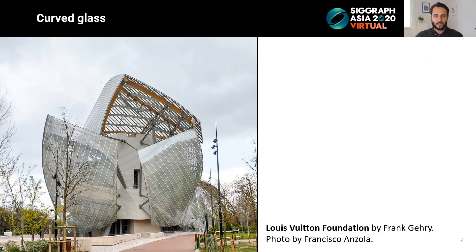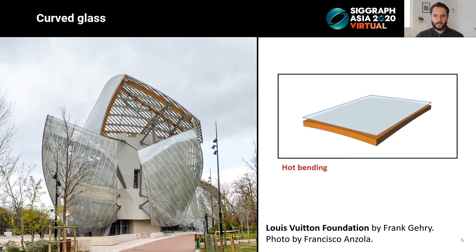Traditionally, free-form glass facades, such as this example, are fabricated using hot bending. This process is costly and labor intensive. Fabrication of each panel requires heating glass in a special oven to make it moldable. Then the panel is bent into shape and retains its curved state after cooling. Some of the disadvantages of the method are the high cost and energy requirements, along with the material waste due to the need of building numerous unique molds.